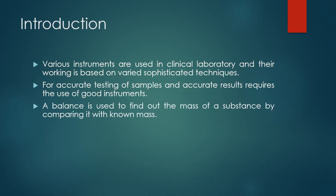A balance is used to find out the mass of a substance by comparing it with a known mass. We compare the mass of the substance we need to measure with the known mass, and if they are equal, then we have the accurate mass of that substance. There are three types of balances commonly used in the laboratory.